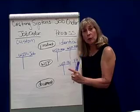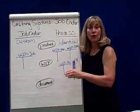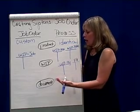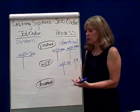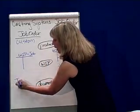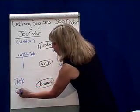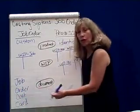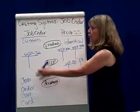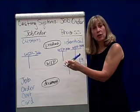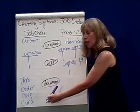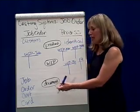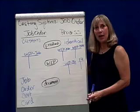So notice in process costing, many different work in process accounts — one for each department. Job order costing has a work in process account for each job, so if you work on ten jobs, you can have ten different work in process accounts. As far as the documents that track these costs, in job order costing we have something called a job order cost card. There are many examples of a job order cost card in the book. Basically, you take the customer's order, track your materials, your labor, and your overhead costs, accumulate your costs, compare that to what the customer paid you, and see if you got a profit or not on that job order.